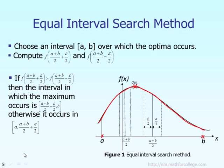The next step we can do is pick up the midpoint between A and B. The midpoint of A and B is right here. Then from that midpoint, you go a little bit to the right by the amount epsilon over 2, right here. And you go a little bit to the left, this point right here. So now, up to this moment, we have four points: the lower bound A, the upper bound B, the point A plus B over 2 plus epsilon over 2, and A plus B over 2 subtract epsilon over 2.